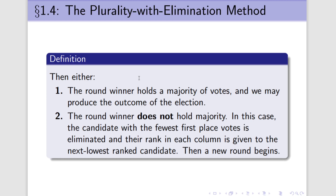In round two, we do exactly the same thing. We see who has the most first place votes. If they hold majority, we skip to the outcome. And if they do not hold majority, we eliminate the candidate with the fewest first place votes this time, we shift the columns up as necessary, and then we start round three. And we just keep cycling through over and over again. Eventually we are going to reach a round where somebody has both the most first place votes and a majority.